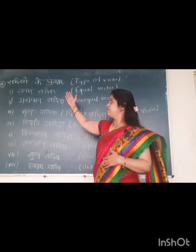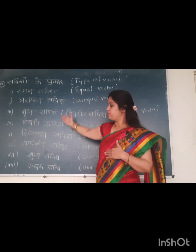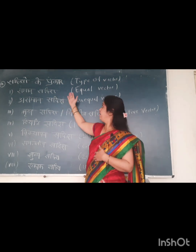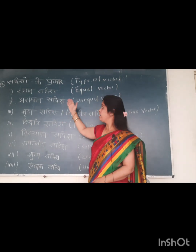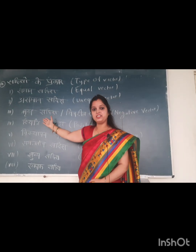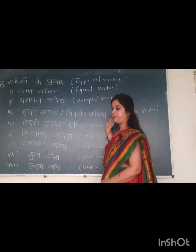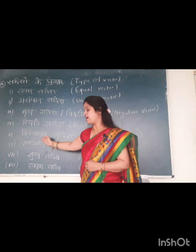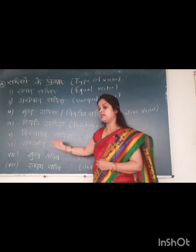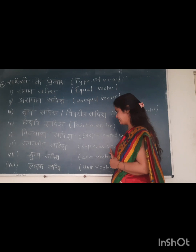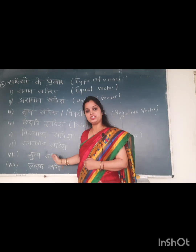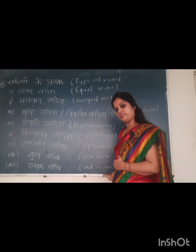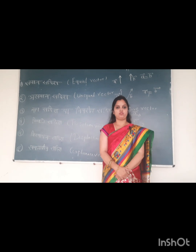Now we will discuss the types of vectors. There are several types of vectors: equal vectors (saman sadish), unequal vectors, negative vectors (rind sadish / pratidish sadish), co-planar vectors (samtarhiya sadish), position vectors (istititi sadish), displacement vectors (visthapan sadish), zero vectors (shoonya sadish), and unit vectors (ekaan sadish). These are the main types of vectors.